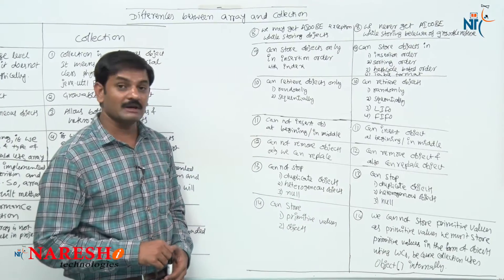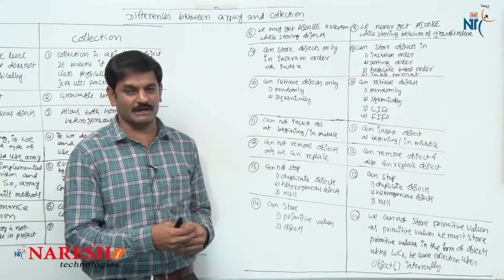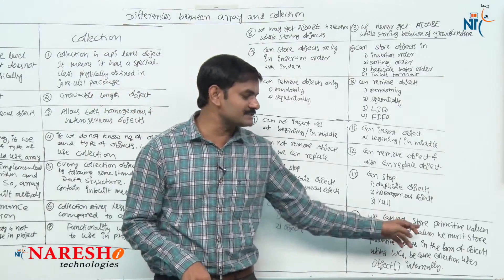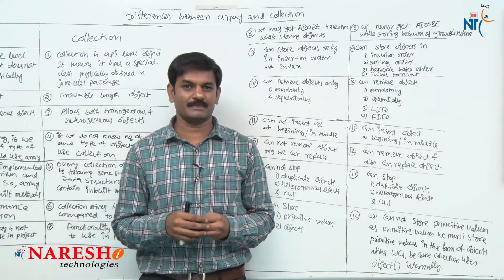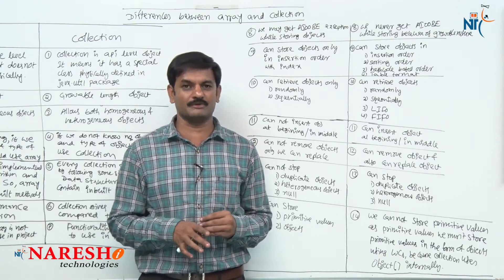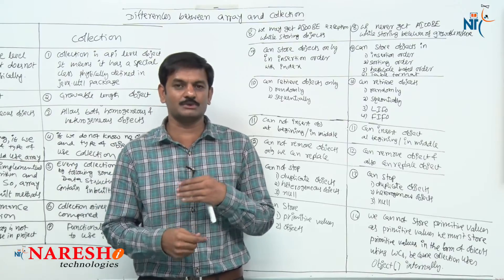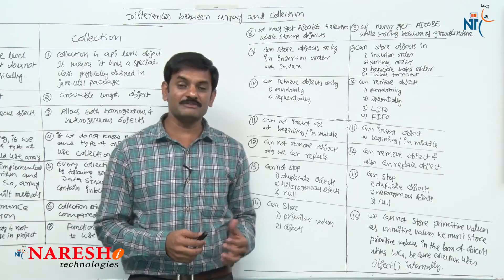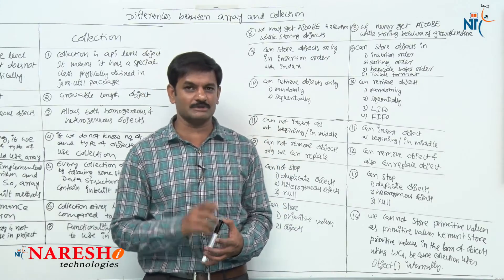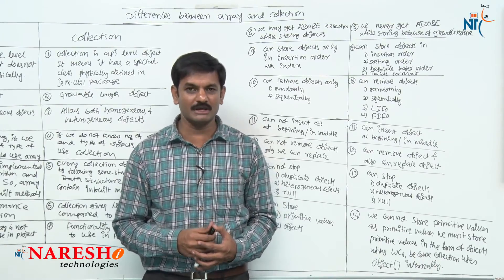Fourteenth difference — primitive values: array allows us to store primitive values directly as primitive types, and also objects. But collection does not allow primitive values to be stored as primitive types. It allows them only in the format of wrapper class objects — it is the programmer's responsibility to convert to wrapper class type before storing. Why? Because collection uses an object array internally, and object arrays are of reference type, so primitive values cannot be stored directly.